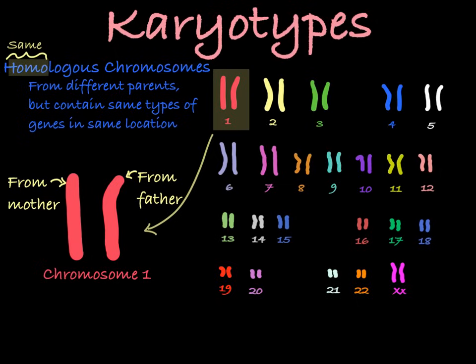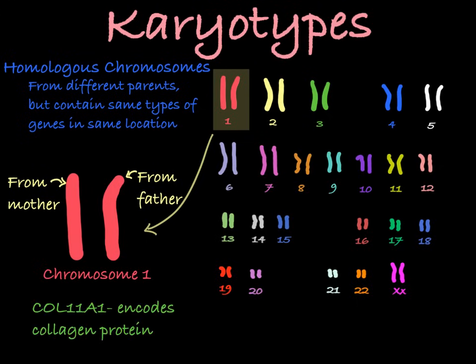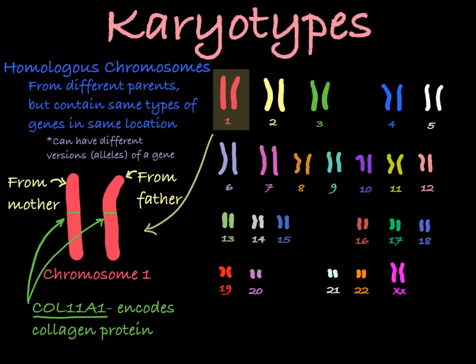In fact, a specific gene will generally be located in the same locus on a specific type of chromosome across an entire species. For example, the COL11A1 gene, which holds the code for the protein collagen, is always going to be found in the same locus on chromosome 1, right around here, in any human chromosome number 1. These homologous pairs could have different versions of a gene between them, but they both have the gene in the same location.